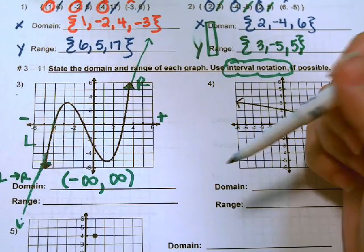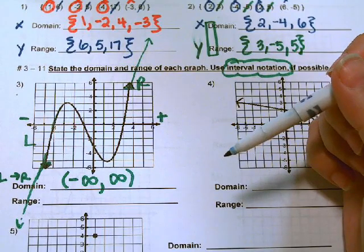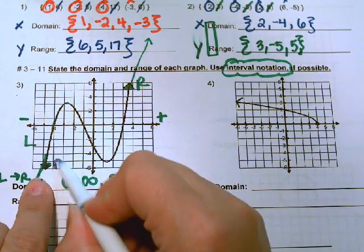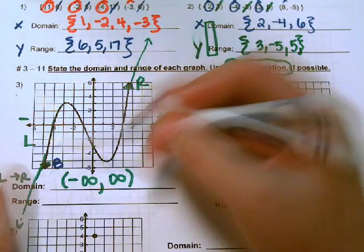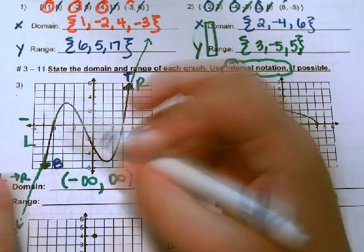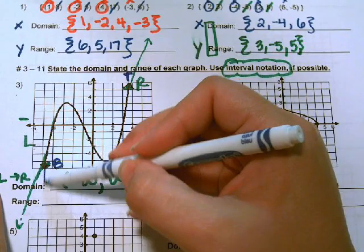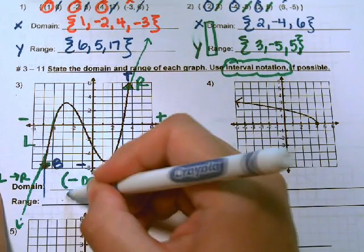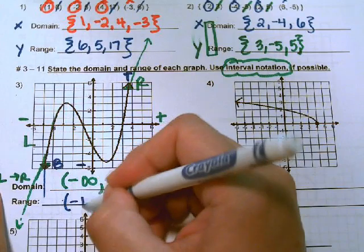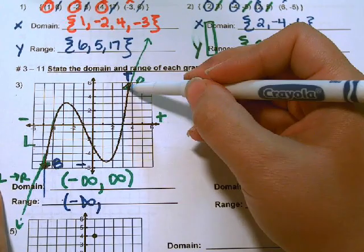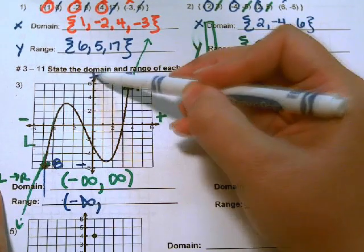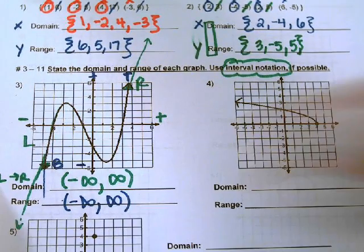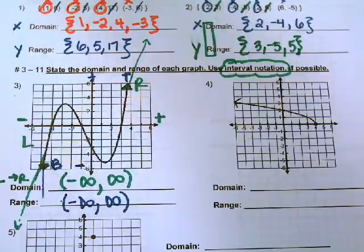The range is from the bottom to the top. At the bottom of the graph I see an arrow, and at the top I also see an arrow. That means at the bottom it keeps going down — all negative — and at the top it keeps going up — all positive. So the domain and range are both all real numbers.